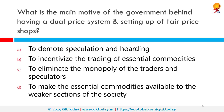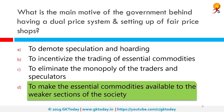What is the main motive of the government behind having a dual price system and setting up fair price shops? The correct answer is to make essential commodities available to the weaker sections of society. Fair price shops are ration shops. Dual pricing is where the same product or service is sold at different prices in different markets. Fair price shops distribute essential commodities to ration card holders under the targeted public distribution system.